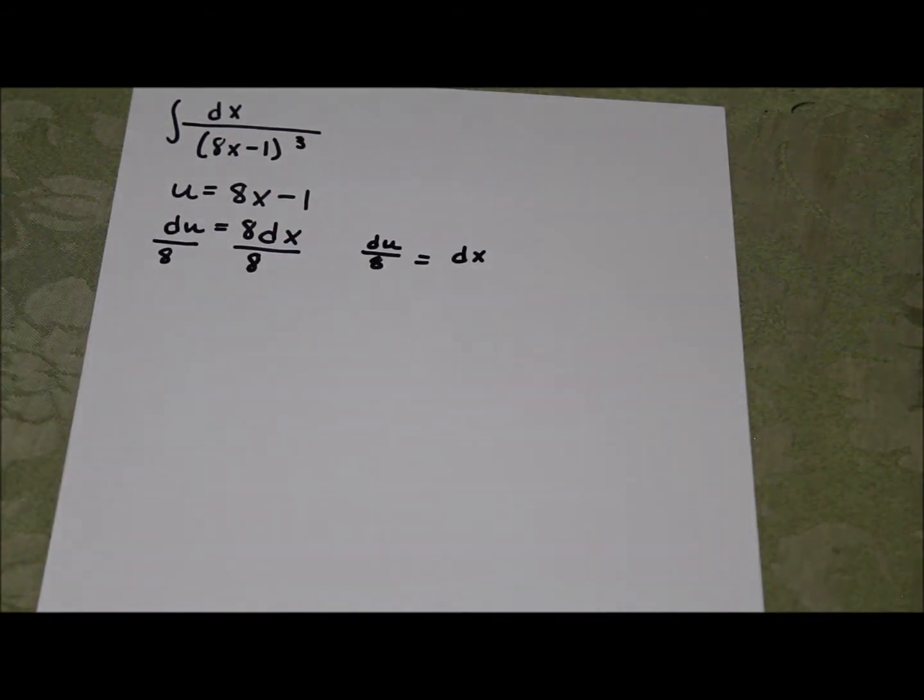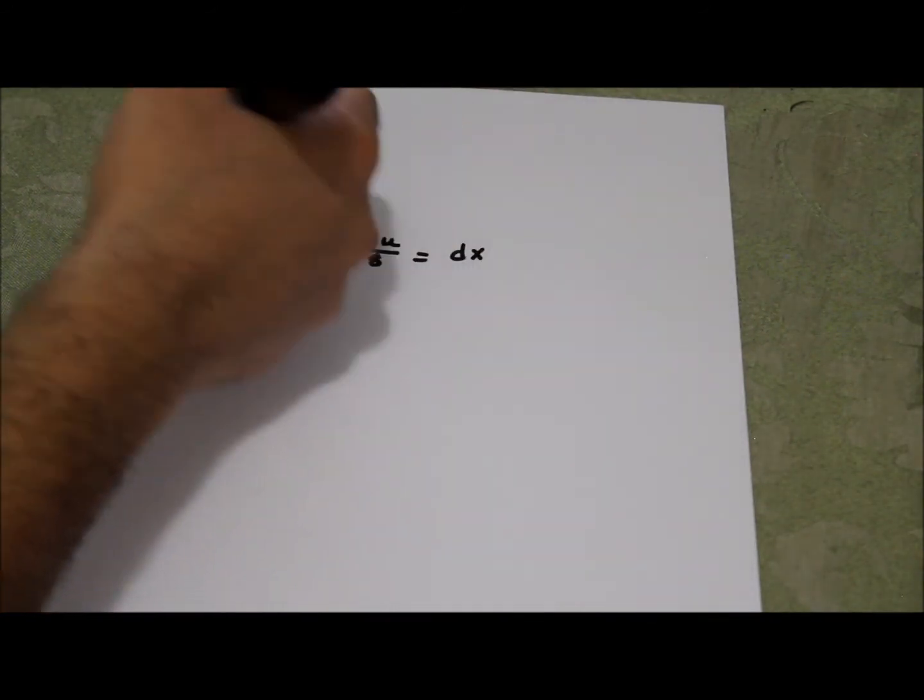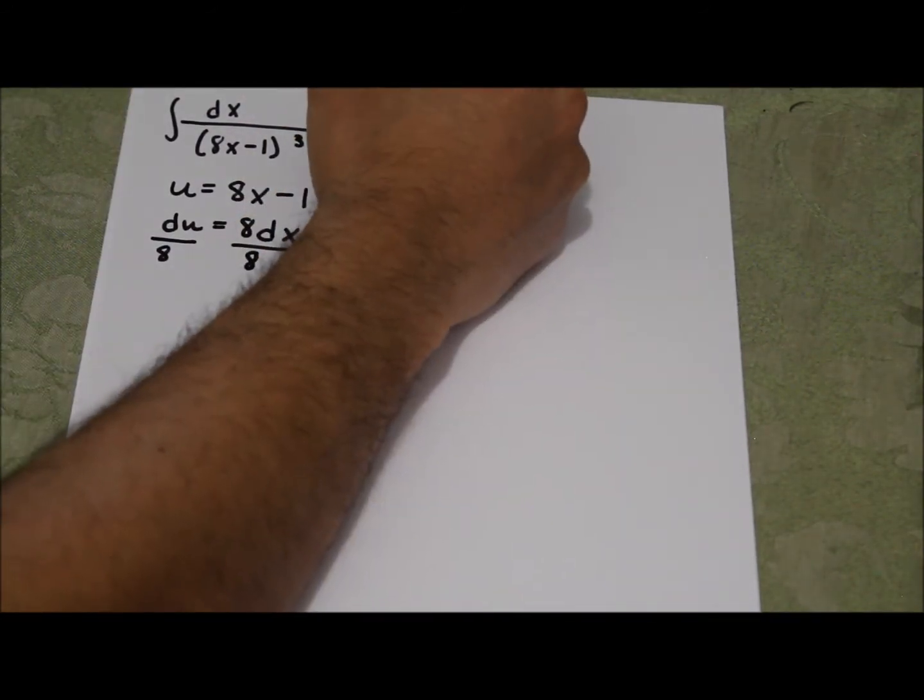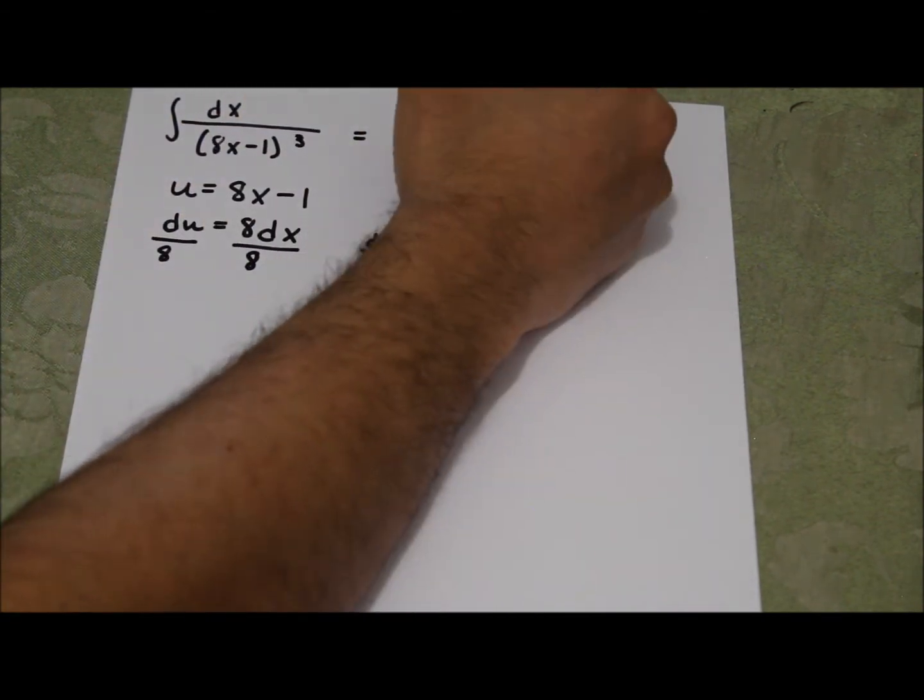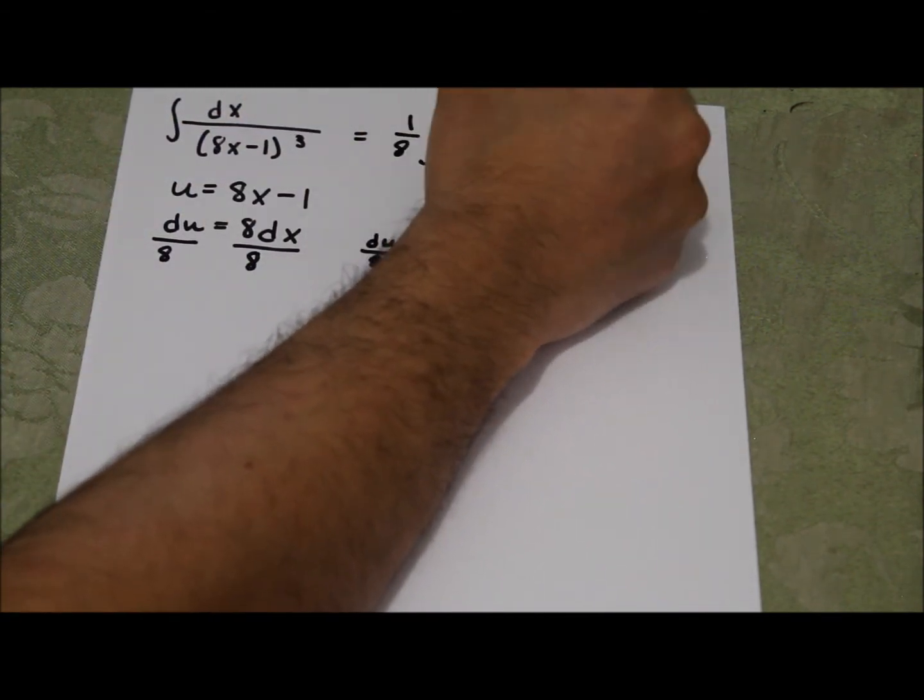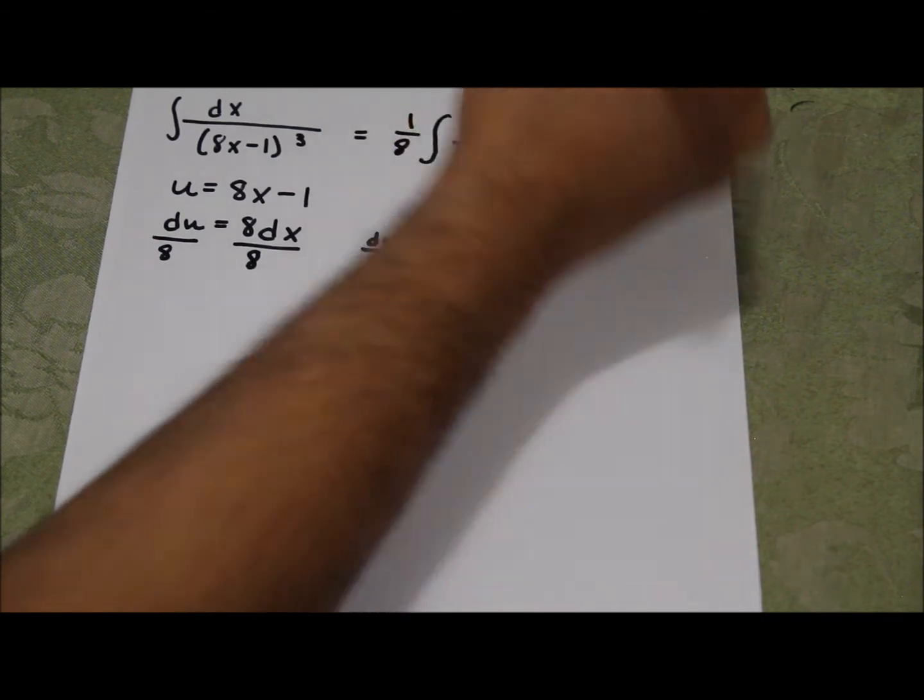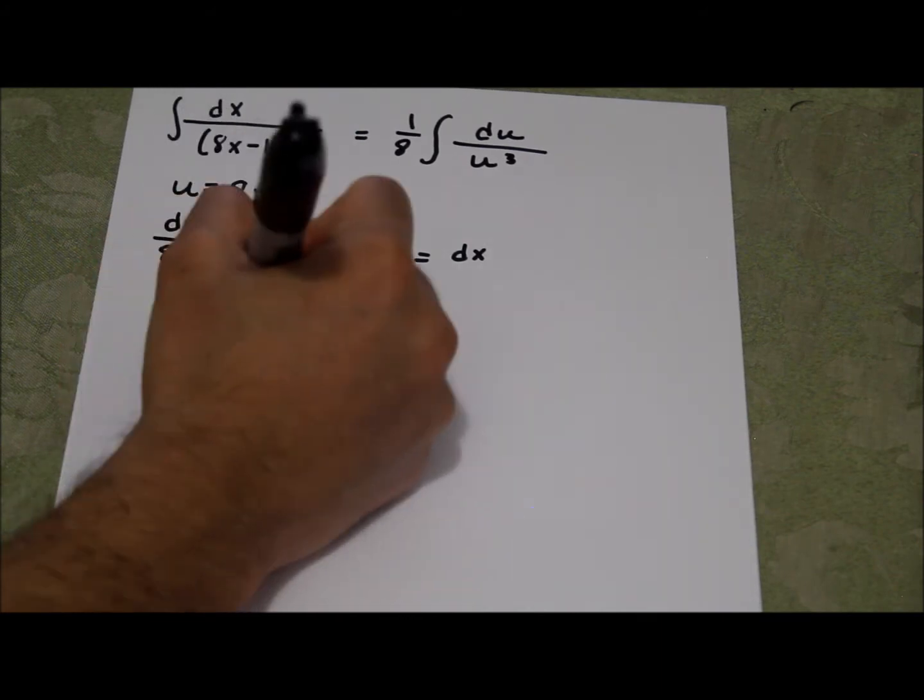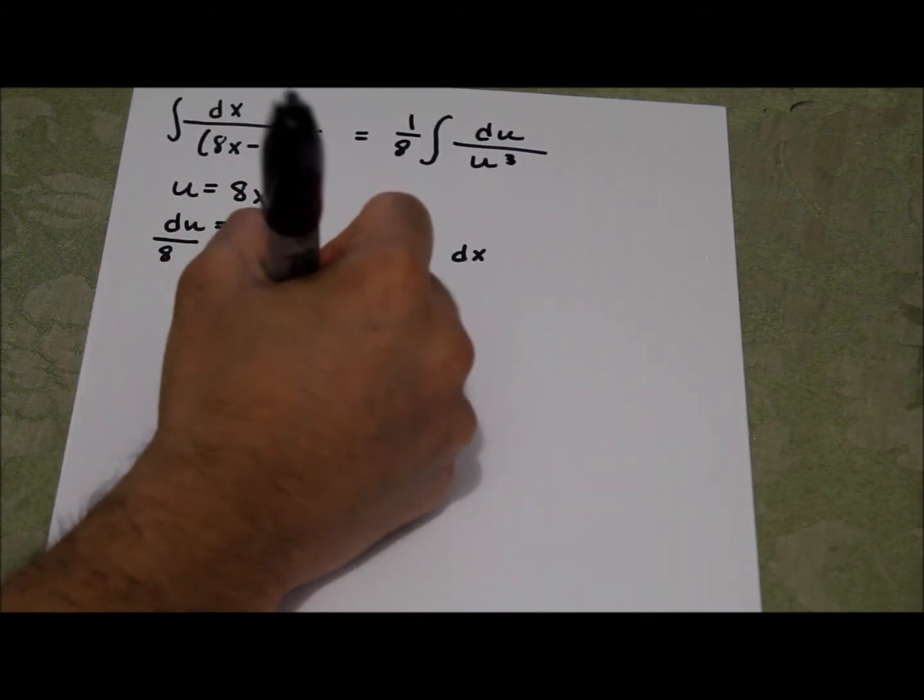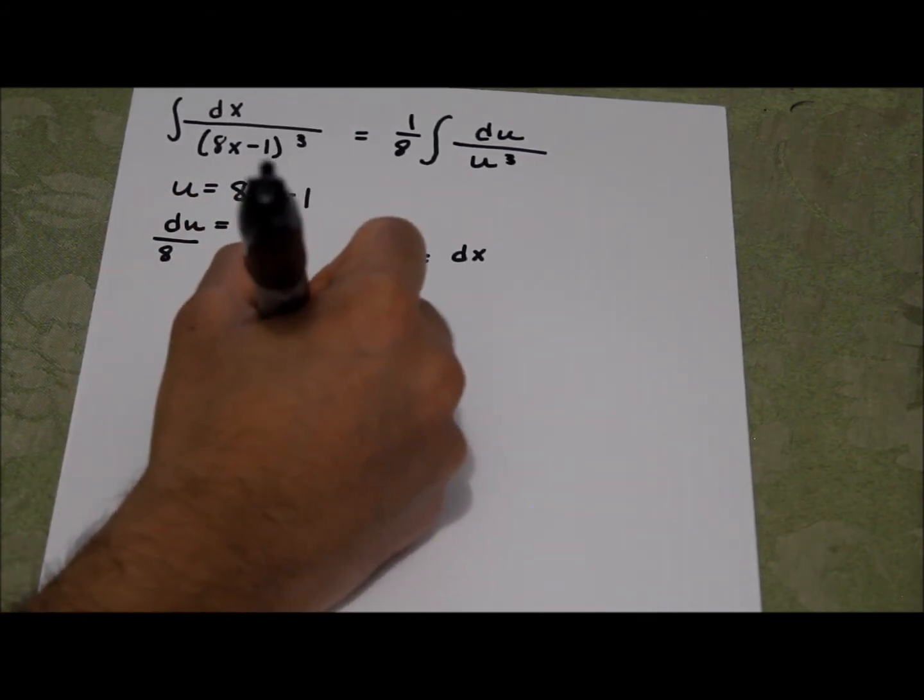Now we can rewrite that problem. And remember, you can always take the constant out. So the constant is going to be multiplied by the integral. And then du over u cubed. I'm just going to rewrite the problem here: du over u cubed.